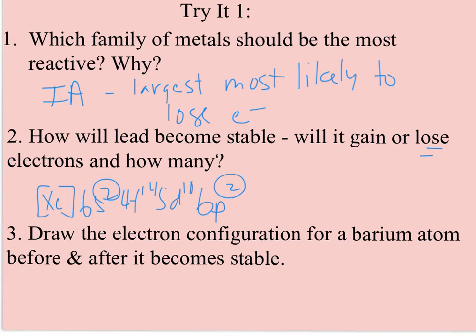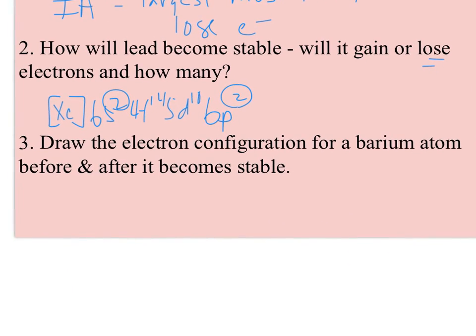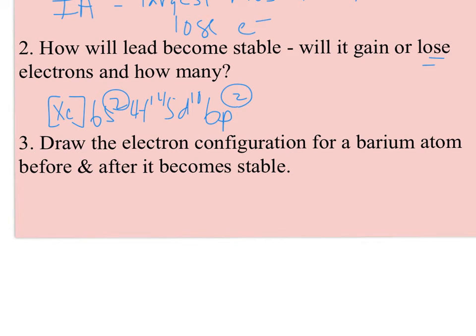And then number 3 asks, draw the electron configuration for barium atom before and after it becomes stable. So if I find barium, barium has got two valence electrons, so its configuration is XE, and then it's just 6S2. So this is what it looks like before and after, it's going to give up those two electrons and leave behind an atom with xenon's configuration and a 2 plus charge on it.